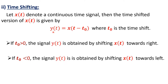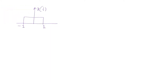Let us take one example. Let this be x(t) signal. So let y(t) = x(t − 2). Here we can observe that the value of t₀ is equal to 2, which is greater than 0. If the value of t₀ is greater than 0, then the signal x(t) will shift towards the right. We will try to draw y(t) now.